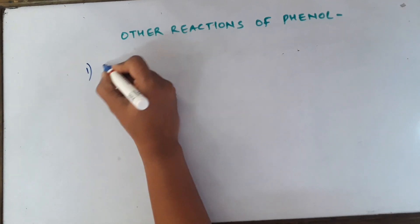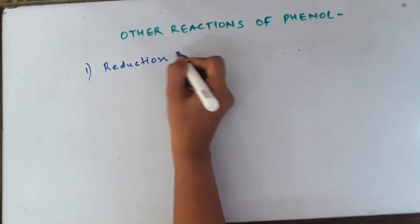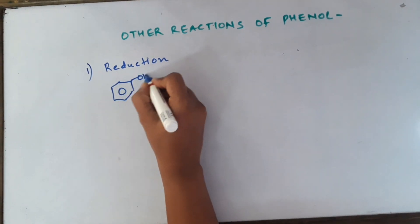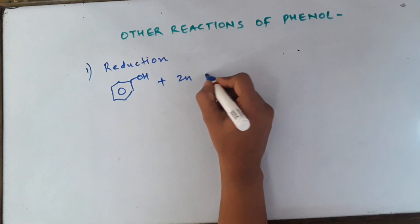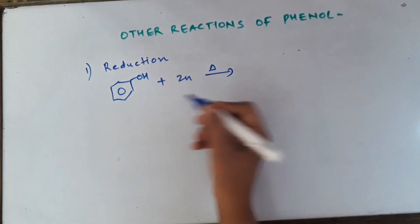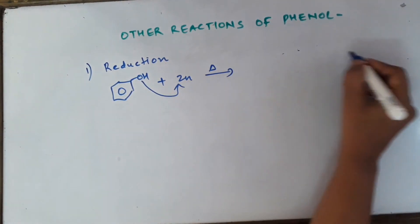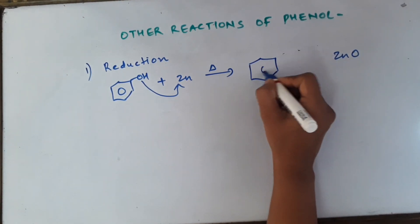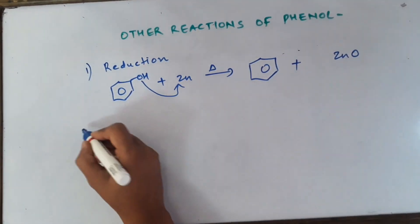In other reactions of phenol, first I will be talking about reduction of phenol which we have done before also. In reduction, the reaction is pretty simple. You take phenol and heat it with zinc powder which will be my reducing agent. The zinc will grab away the oxygen and convert into zinc oxide, and benzene will be formed as the major product.